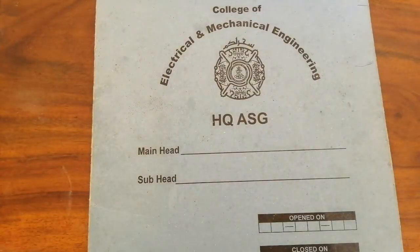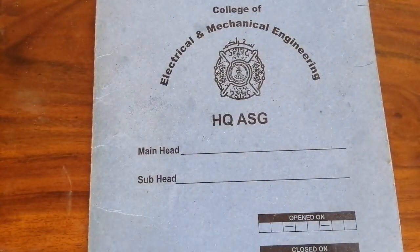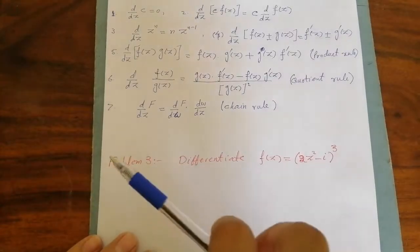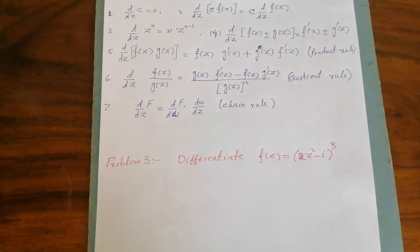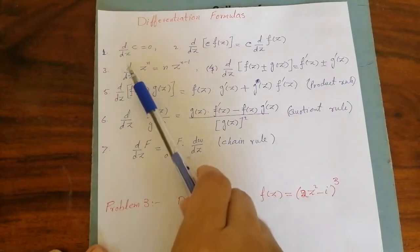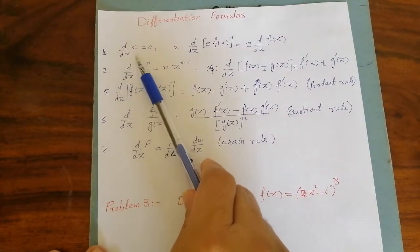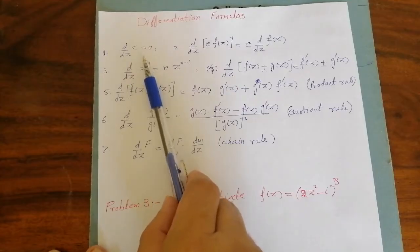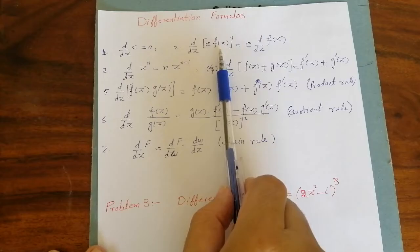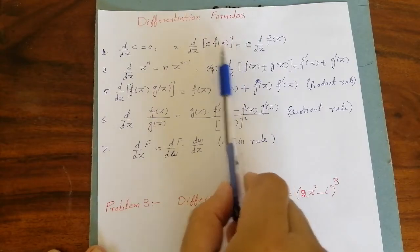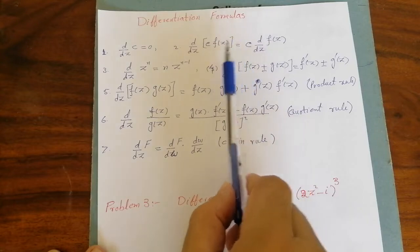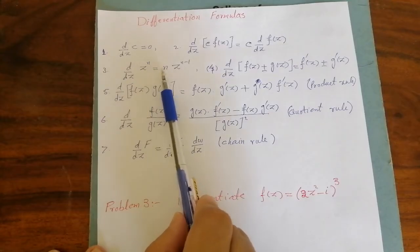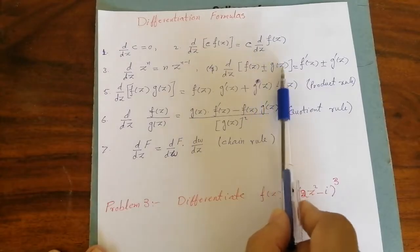Now I have to show you some differentiation formulas. All the rules of calculus can be used here. For example, differentiation of a constant with respect to a complex variable is zero. If a constant is multiplied with a function f of z, that constant can be taken outside, and we can only differentiate the function. Similarly, we can use the power rule: differentiation of z power n is n z power n minus 1. If two functions are in sum or subtraction, we can just differentiate them individually.